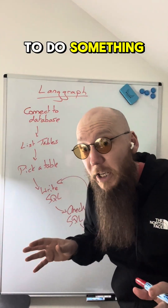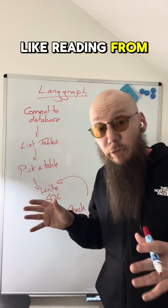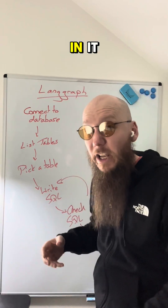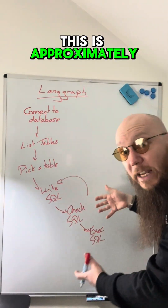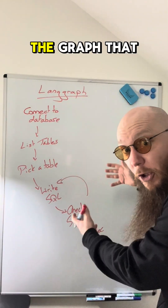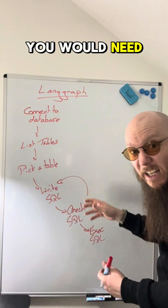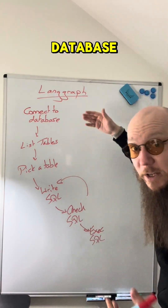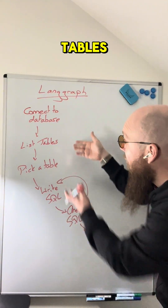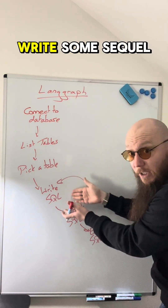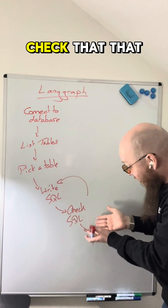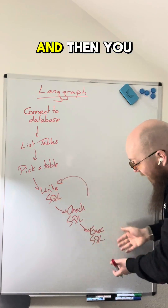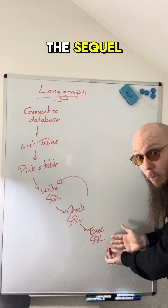So if you have to do something like reading from a SQL table to get some insights into the data that's actually in it, this is approximately the graph that you would need in order to be able to do that. You need to connect to the database, you need to list out the tables, you need to pick a table, you need to write some SQL, you need to check that that SQL is valid, and if it isn't, go back. And then you actually do the SQL.